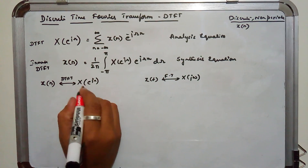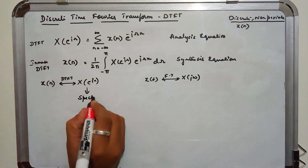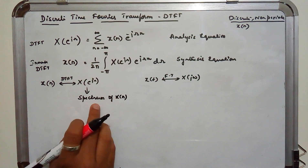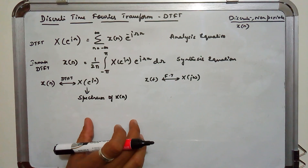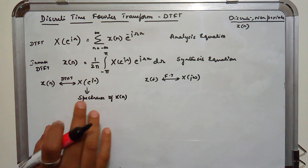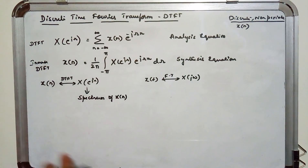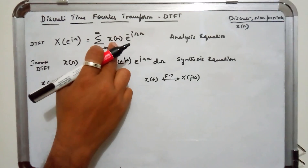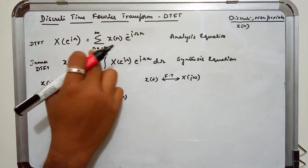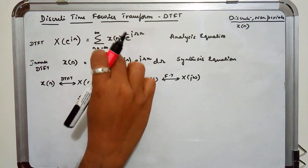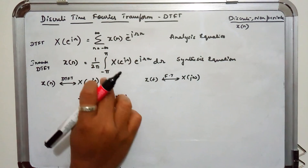X(e^jω) is called the spectrum of X[n]. It exists between −π to +π and is periodic with period 2π. These two equations — the analysis and synthesis equations — are the fundamental equations to find the DTFT and inverse DTFT of a discrete time signal. If given a discrete time signal, use the summation equation to find the DTFT. If given X(e^jω), integrate over an entire period of 2π.